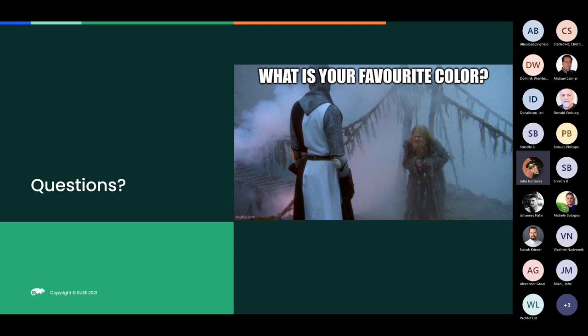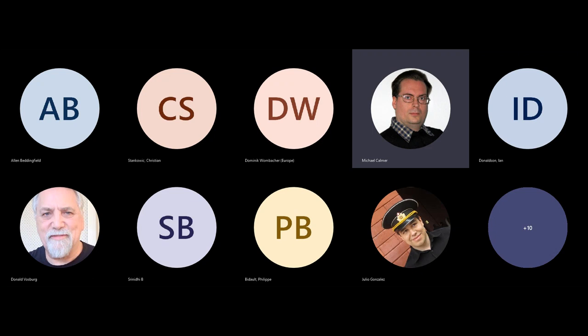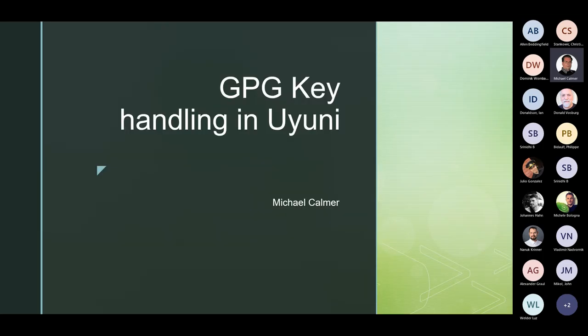Now it's time for Michael to talk about the GPG key management improvements included in the last two Uyuni versions. This feature was requested by the community a long time ago, especially as more cases appeared where external repositories — maybe other build service repositories — are included and they are all signed with different GPG keys. The question is always how to get those keys to the client side.